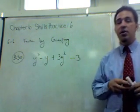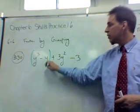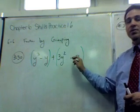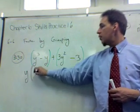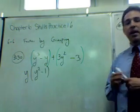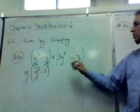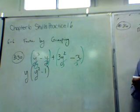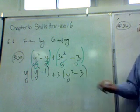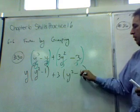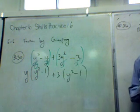In this case, y cubed minus y — we have a y in common — so we'll put brackets around those. Over here we'll put brackets around three y squared minus three, because three is in common. We factor them as we've done before: that gives us y times (y squared minus one), because dividing by y leaves y squared minus one. For three y squared minus three, dividing by three gives us y squared minus one, so we end up with plus three and y squared minus one.